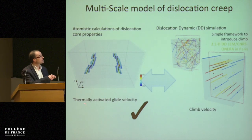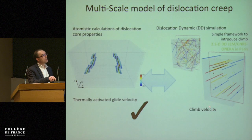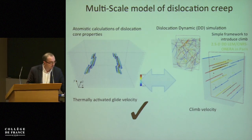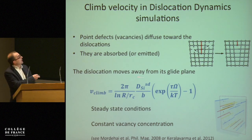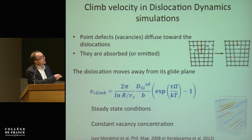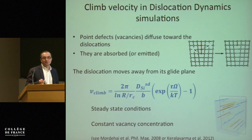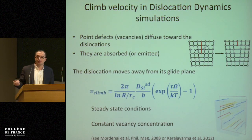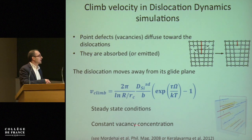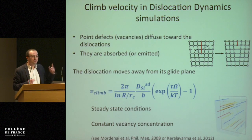At this stage, since we match experimental data, we can be confident in our atomistic calculations and especially in the dislocation velocity extracted from them. The next step is to transfer this to the mesoscale simulation. Here we also need to introduce climb velocity. As a reminder, climb is when a dislocation absorbs or emits point defects, so the climb velocity depends not only on stress but also on the self-diffusion coefficient. Assuming steady-state conditions and constant vacancy concentration, you end up with an expression for climb velocity.